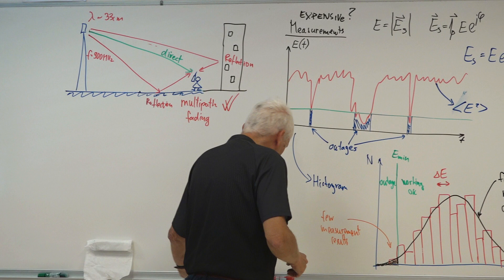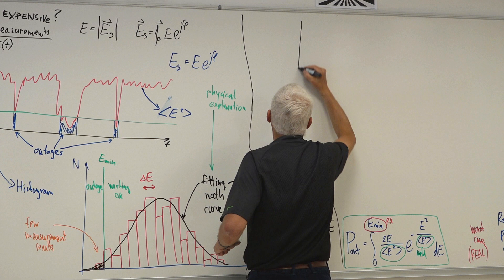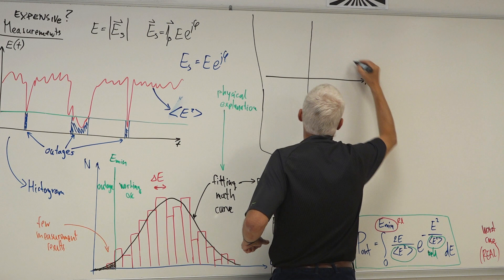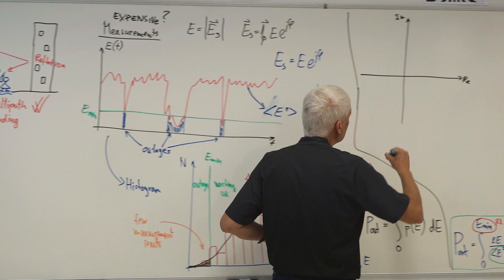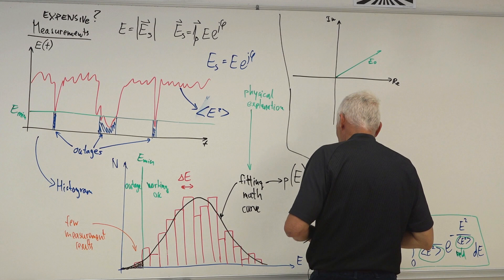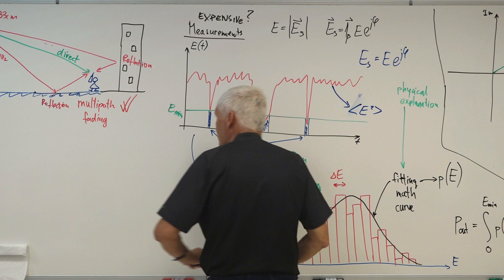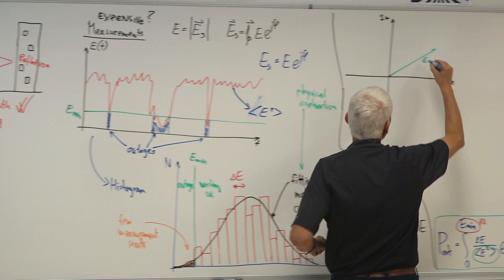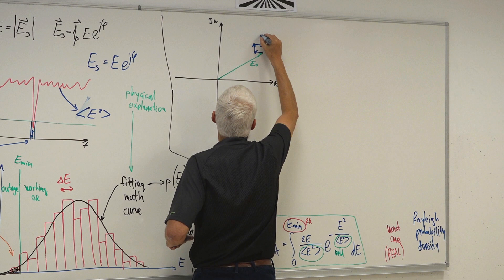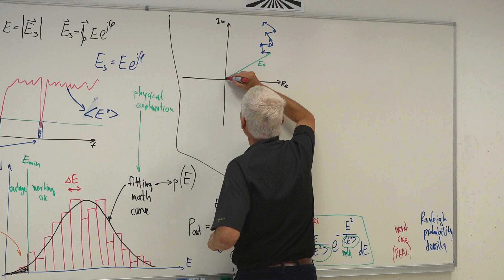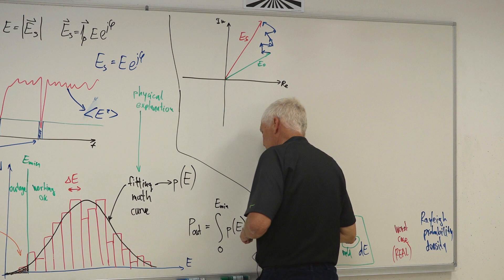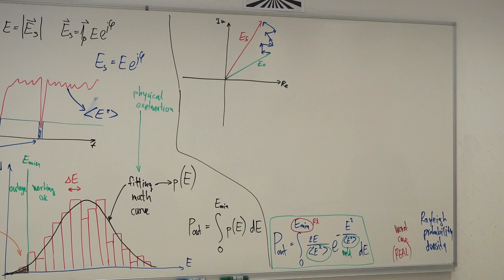So what is my phasor diagram now in this case? I have the real and imaginary axis. I have a very strong contribution from the direct ray — I call it E0. And then on top of this I have many small contributions from different reflections, maybe also refractions from other parts. The sum of all of them is finally my total electric field ES. I'm not talking about polarization changes today.